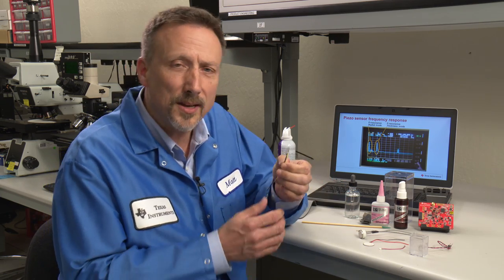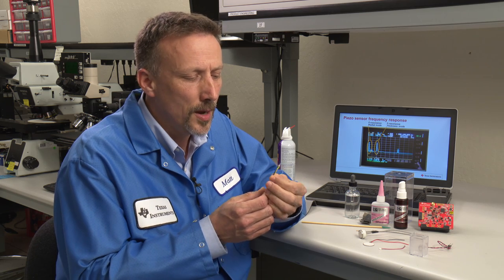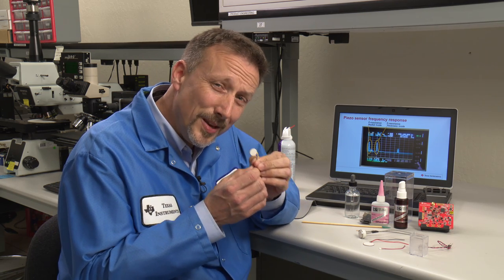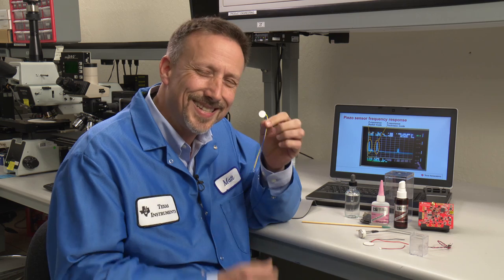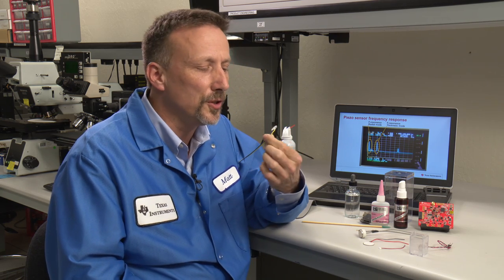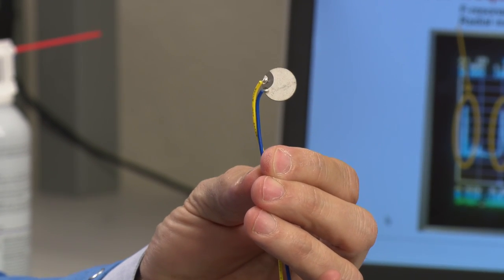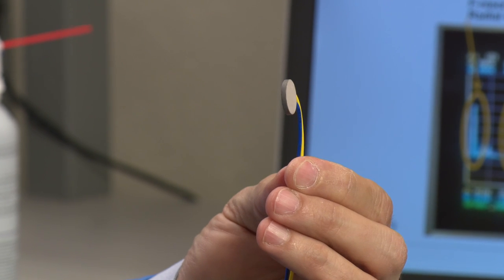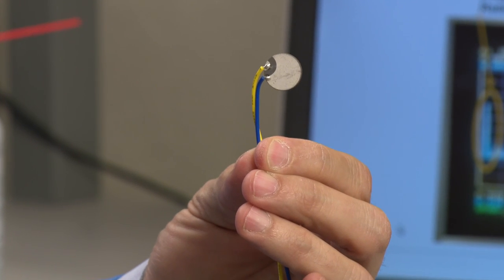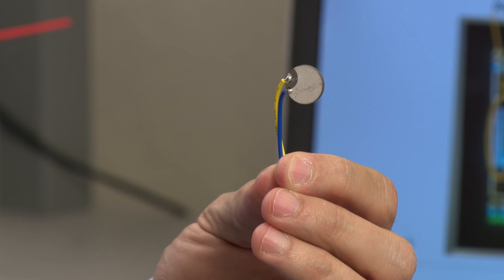Going back to our transducer selection, transducers come in different sizes. The size of the transducer will determine a few things about your application. For the demo today, we're going to use this one megahertz transducer. Looking closely at this transducer, there's two parameters that we're really going to be interested in.